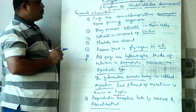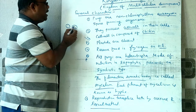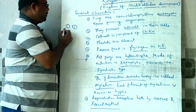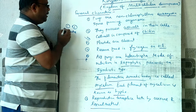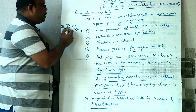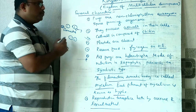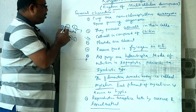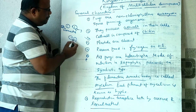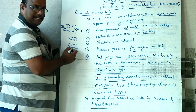During sexual reproduction of fungi, the sexual reproductive cell is known as a gamete. Gametes are of two different types: male gamete and female gamete. During sexual reproduction, gamete fusion takes place. Two opposite mating types of gametes fuse with each other. This gamete fusion is called plasmogamy.